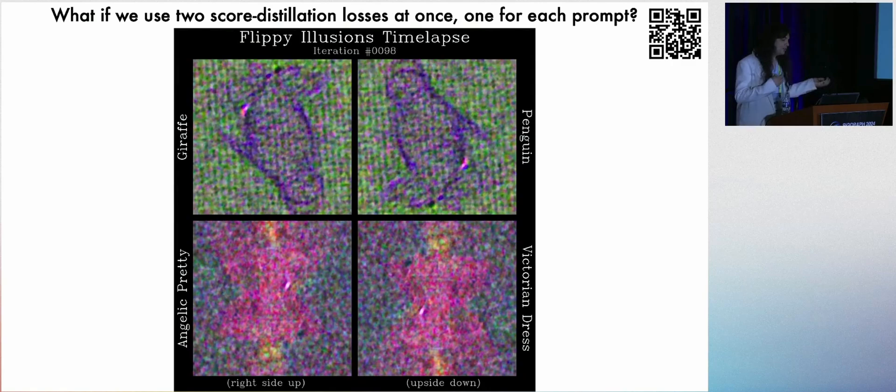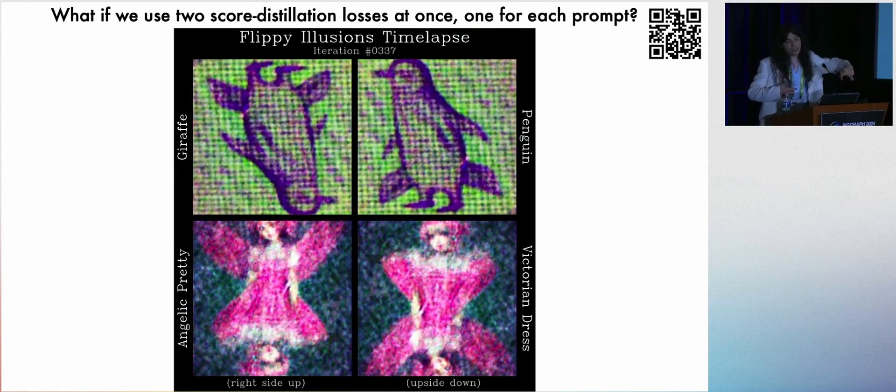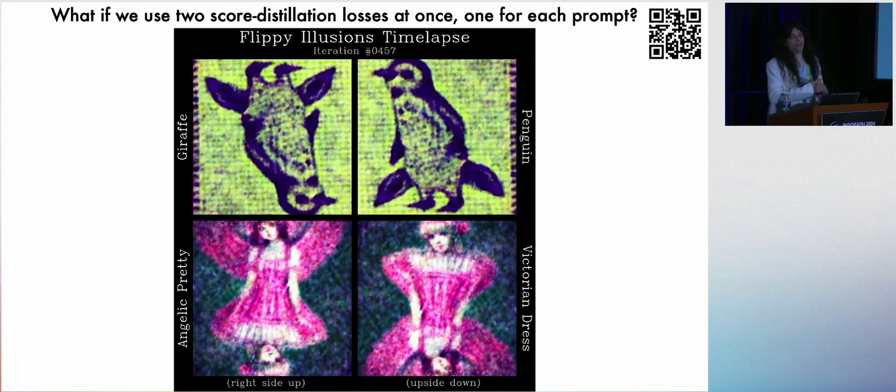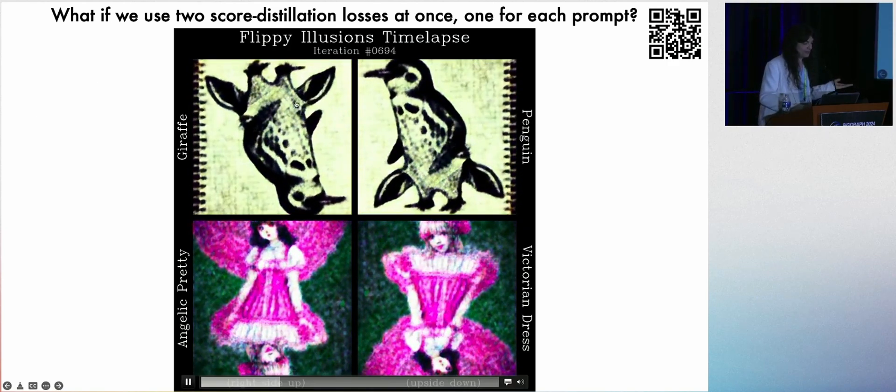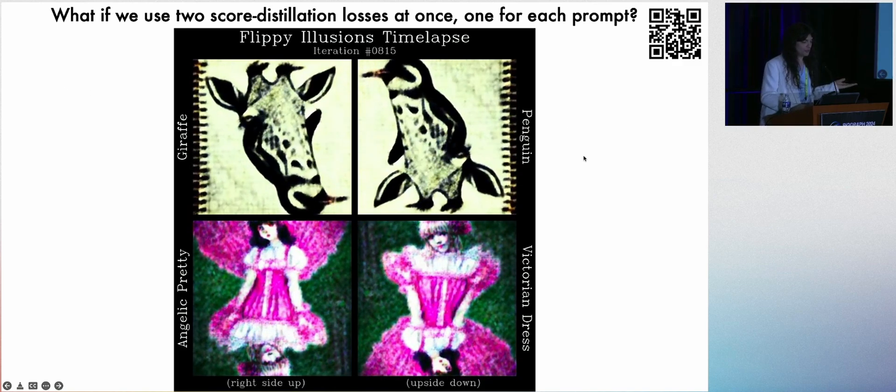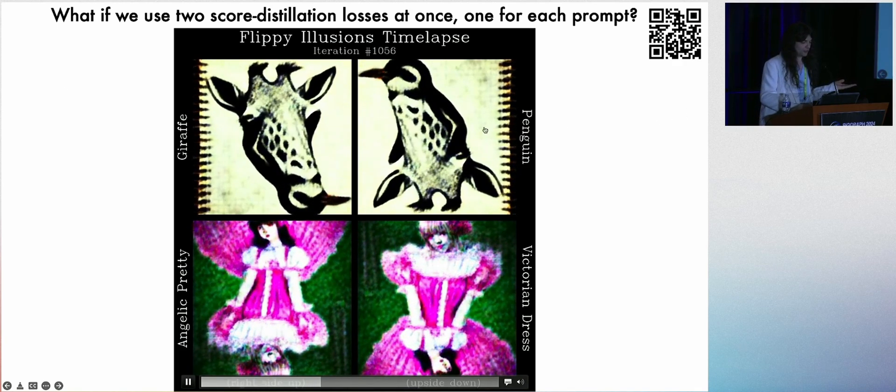And so what if we were to add two losses with two prompts, flip one upside down, and keep the other one right side up before we pass the gradient? Well, now we can create flipping illusions, where we have the giraffe on the left and the penguin on the right, corresponding to their respective text prompts, where this is the prime and both of these are the derived images.